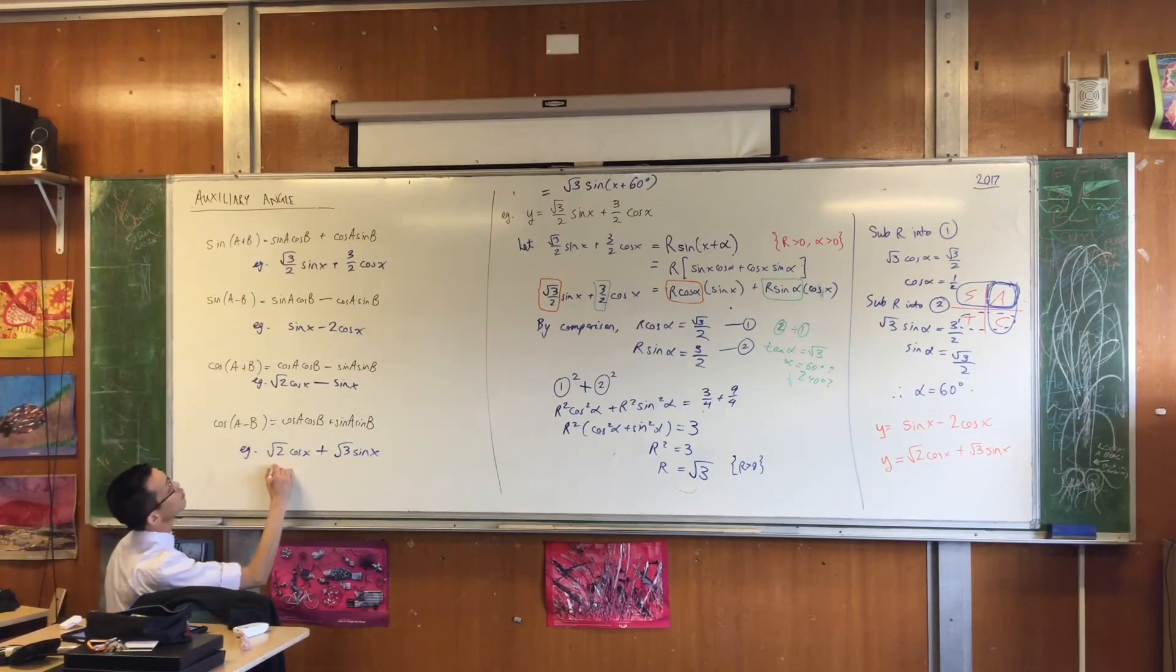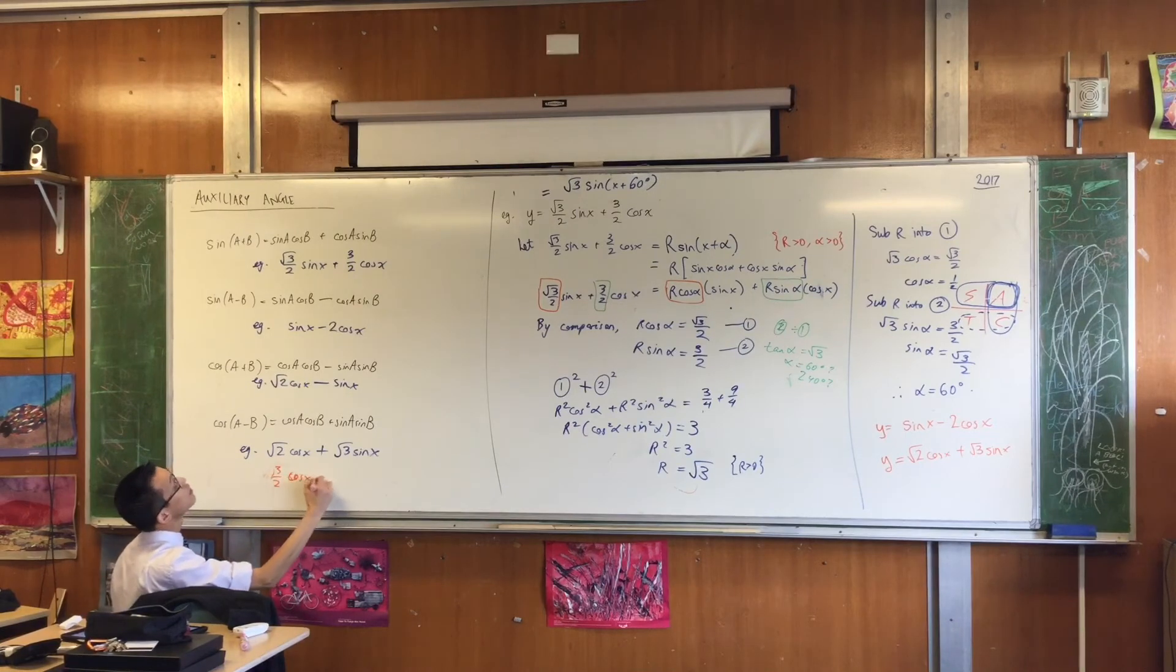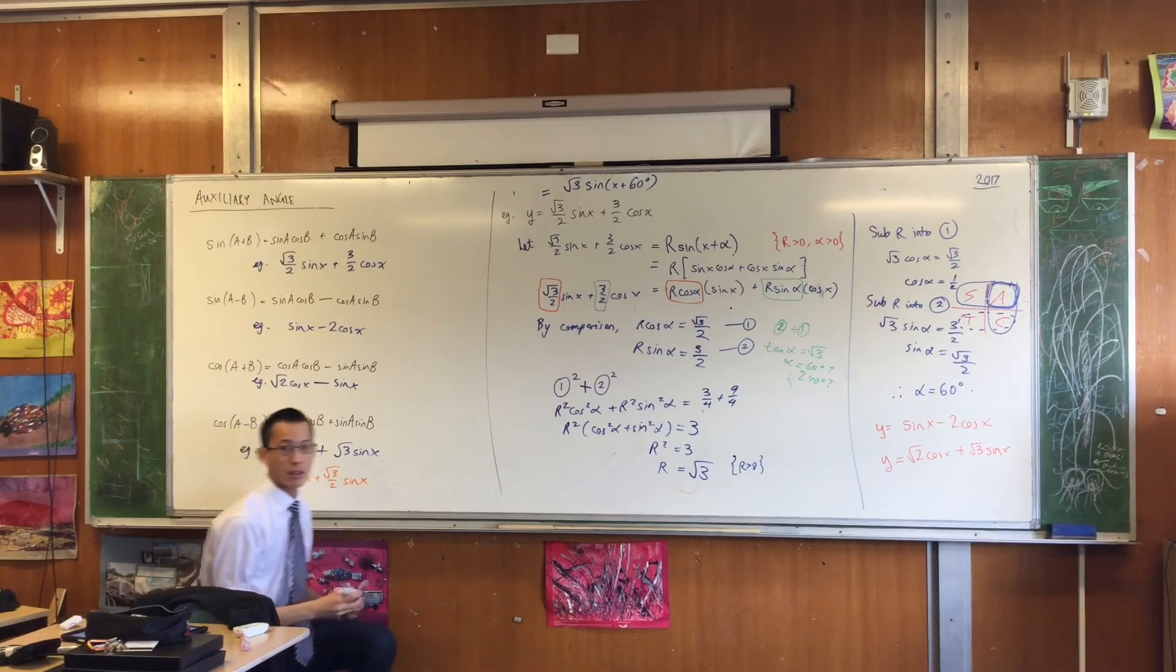Root 3 on 2, sorry, no, just regular 3 on 2, cos x plus root 3 on 2 sine x. Now, here's what's interesting. This is clearly the same function. This function and this function. It hasn't changed, but I can rewrite it using a different auxiliary angle form.